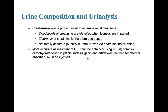Creatinine is a waste product used to estimate renal clearance. Blood levels of creatinine are elevated when the kidneys are impaired, meaning clearance of creatinine is decreased. However, it is not totally accurate, as five to fifty percent of creatinine in urine arrives via secretion rather than filtration. A more accurate assessment of GFR can be obtained by using inulin, a complex carbohydrate found in plants such as garlic and artichokes — it is neither secreted nor absorbed, but it must be injected.